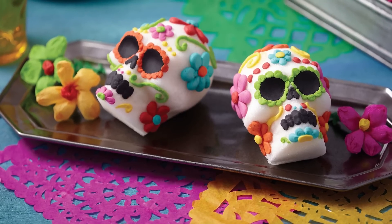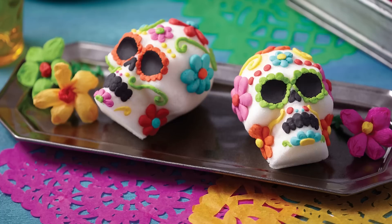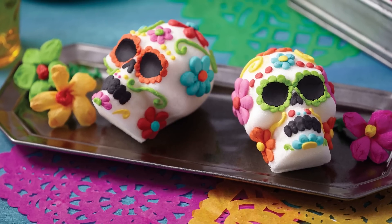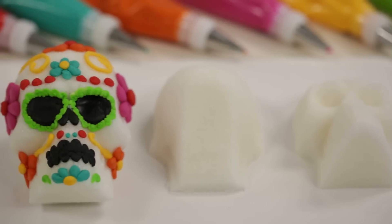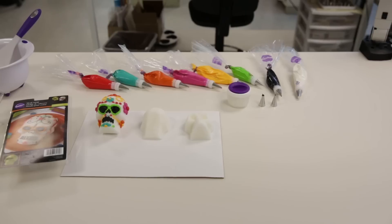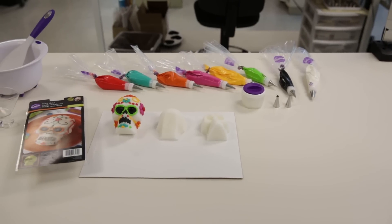Celebrate Day of the Dead by making these sugar skulls decorated with Wilton Royal Icing, tinted with the Wilton Color Right Performance Color System. The skulls are easy to make using the Wilton Skull Mold. You'll want to make your sugar skull two days in advance.